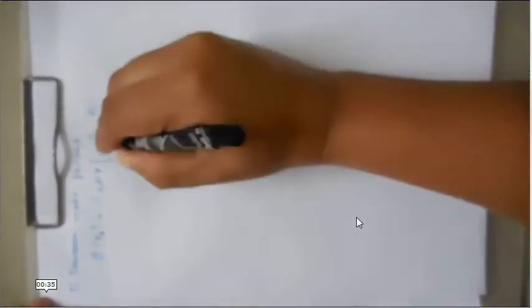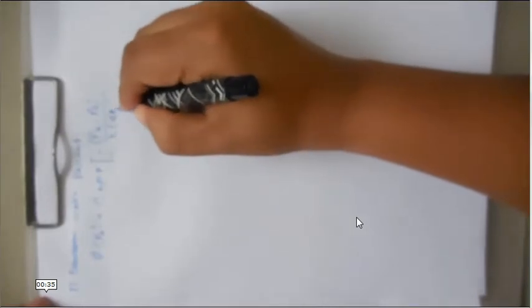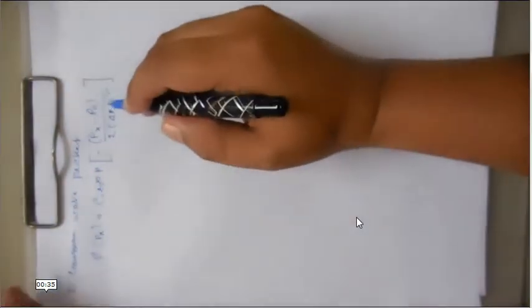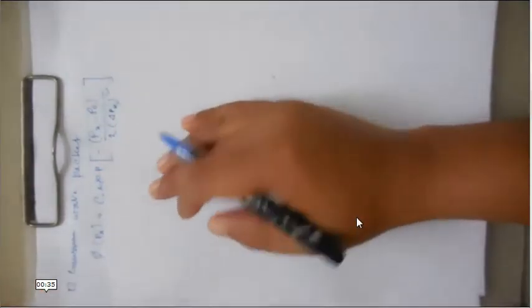That is a value and this is the exponent of the Gaussian function. This is one-dimensional. In your syllabus you can see that they have told to discuss one-dimensional Gaussian wave packet. So I am discussing that one.